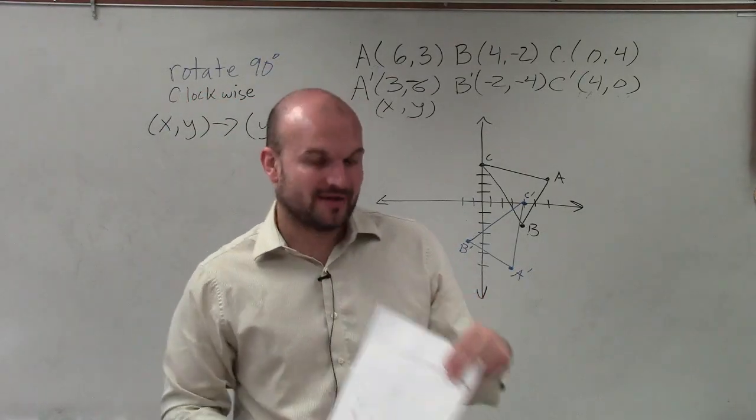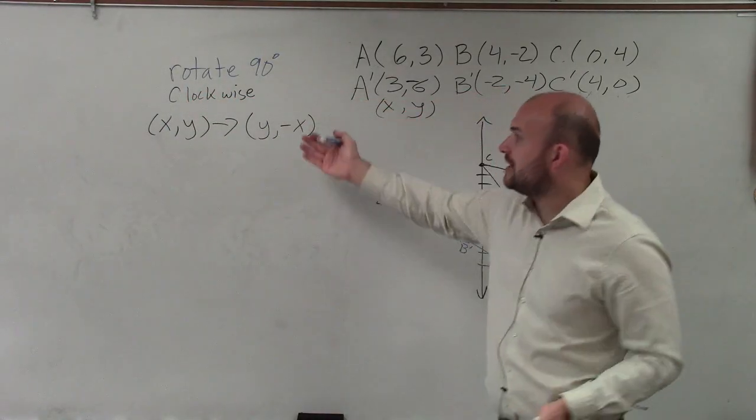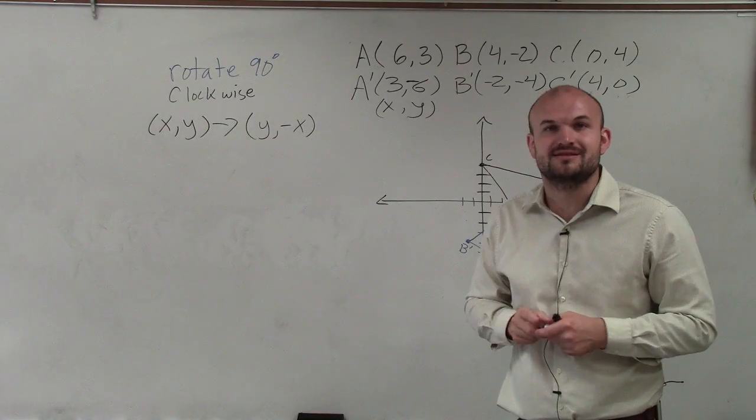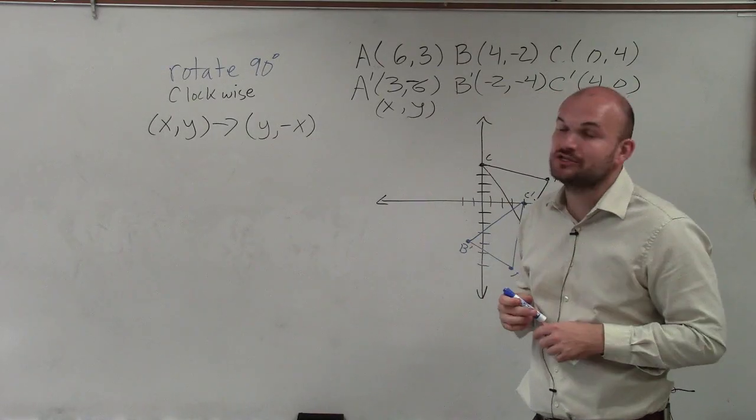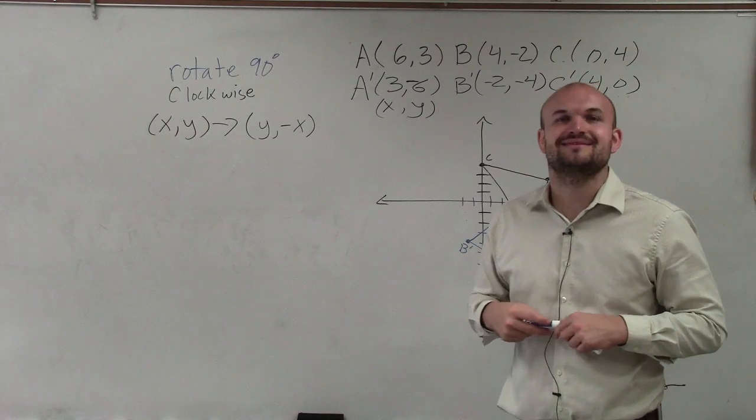So you can use a piece of paper to help you with the rotations, as well as using this formula to help you determine the new coordinates. So there you go, ladies and gentlemen. That is how you determine how to rotate a figure 90 degrees clockwise. Thanks.